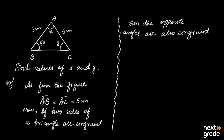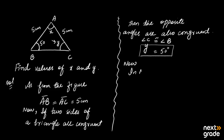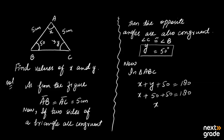The side AB is opposite to angle C, which is Y, and angle B is 50 degrees. So since AB equals AC, we get angle C congruent to angle B, meaning Y equals 50 degrees. Now, for X, using the triangle interior angle sum property: x plus y plus 50 equals 180. Substituting y equals 50: x plus 50 plus 50 equals 180, so x equals 80 degrees.